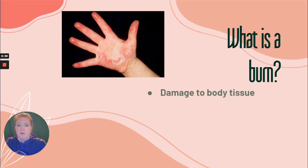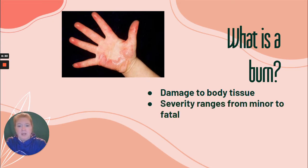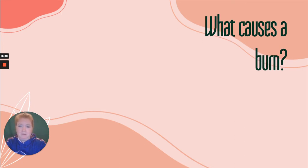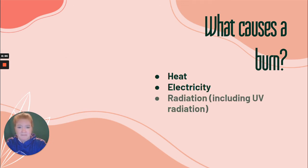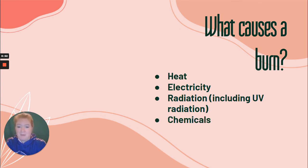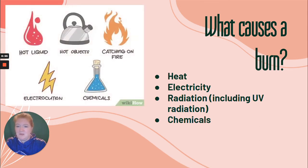What is a burn? A burn is damage to the body tissue. It can range in severity from very minor to fatal. So what causes a burn? Heat, electricity, radiation including UV radiation, and chemicals — there are many things that can cause burns. The heat could be from an object that you touch that's hot, it could be from fire, or it could be from liquid that spills on you that's hot.